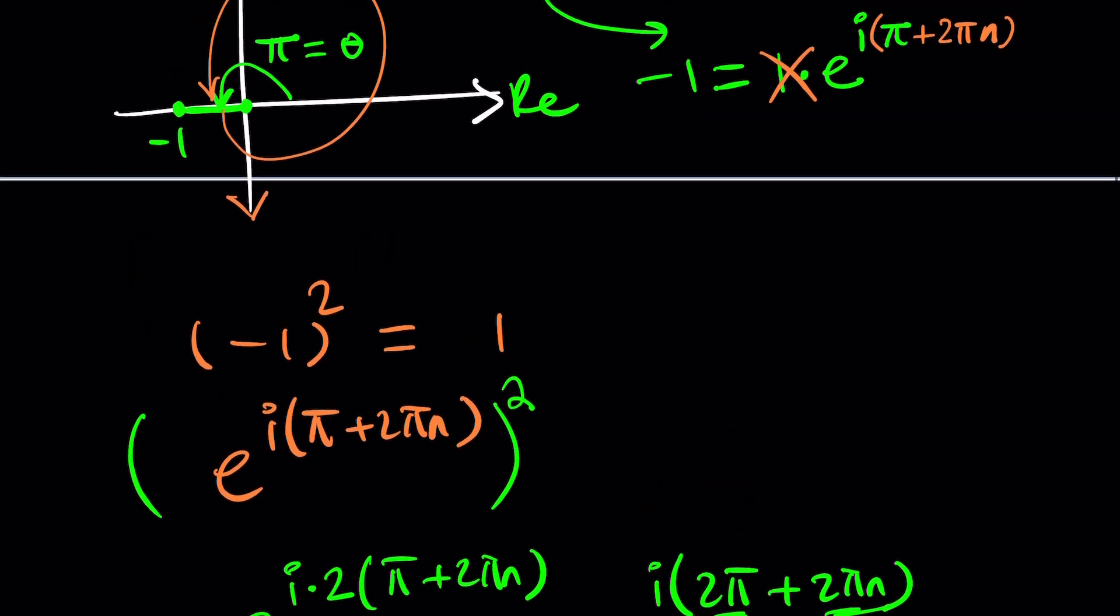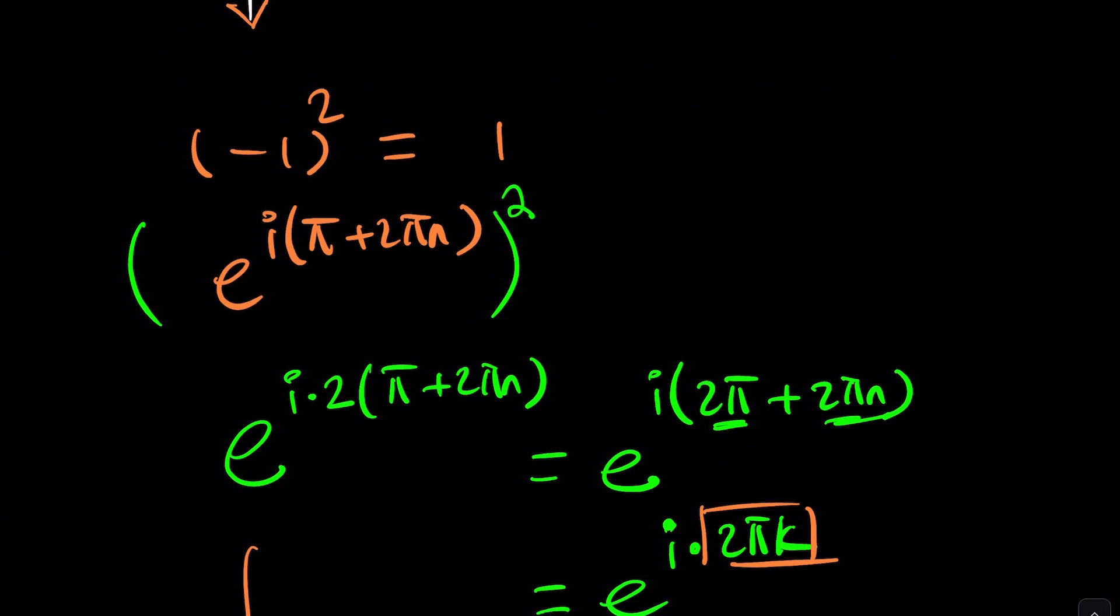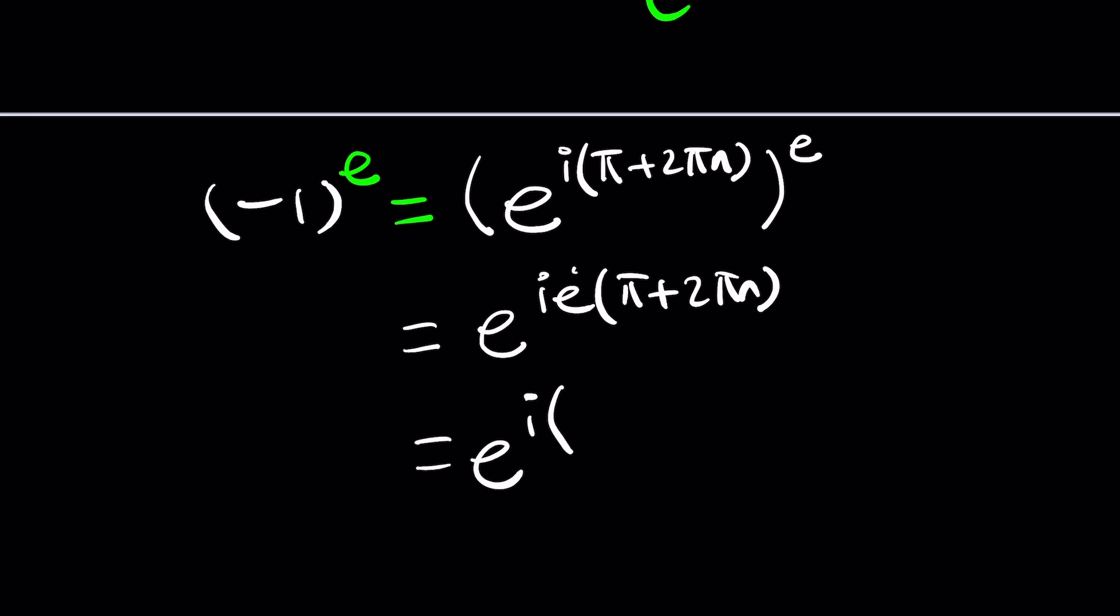But such a complicated way to get 1. Why not use it for our expression? So our problem was raising negative 1 to the power e. Let's go ahead and do that. We're going to raise it to the power e. Replace negative 1 with what it is, e to the power i times pi plus 2 pi n. And now we're going to go ahead and raise it to the power e. And that'll become e to the power i e multiply by pi plus 2 pi n. And then this will become e to the power i times, I'll distribute the e inside, e pi plus 2 pi n e.